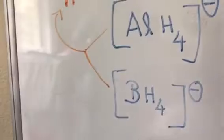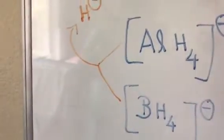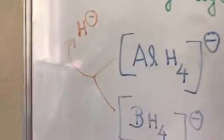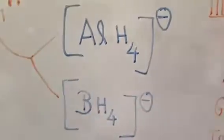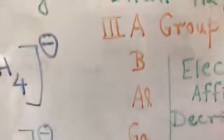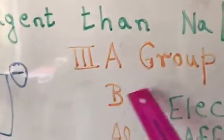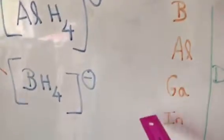In both these complexes, the central atom in lithium aluminium hydride is aluminium, whereas in sodium borohydride it is boron. Both these central atoms belong to the same group of the periodic table, which is the third A group, comprising boron, aluminium, gallium, indium, and thallium.